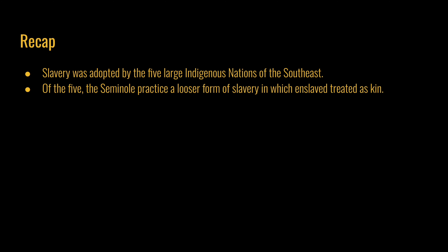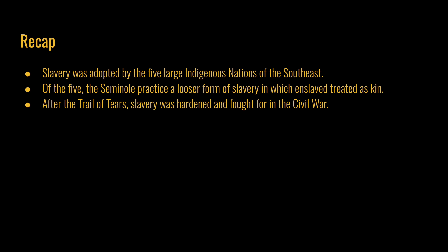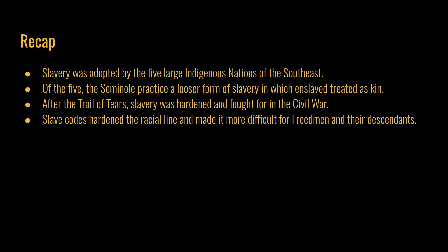And finally, here's the recap. Slavery was adopted by the five largest indigenous nations of the Southeast. Of the five, the Seminole practiced a looser form of slavery in which enslaved people were treated as kin. After the Trail of Tears, slavery was hardened and fought for in the Civil War. The slave codes hardened the racial line and made it more difficult for freedmen and their descendants. This history illustrates the complex relationship and significant impacts of slavery and assimilation policies on Black and indigenous communities, shaping their interactions and legacies up to the present day.